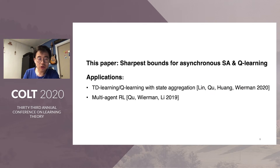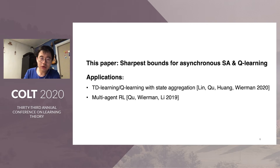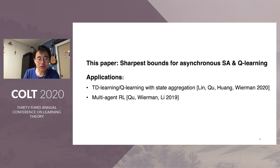In this talk, we will provide the sharpest bounds for the class of asynchronous stochastic approximation schemes. As a result, we also obtain the sharpest bounds for asynchronous Q-learning. And beyond Q-learning, our results on stochastic approximation also apply to other settings like TD learning with state aggregation and a multi-agent reinforcement learning setting.